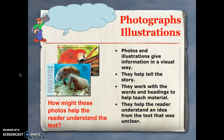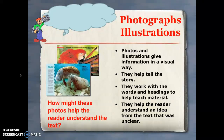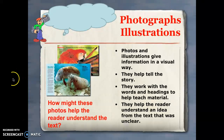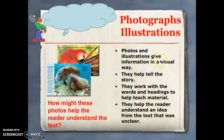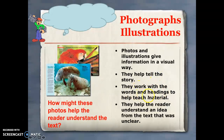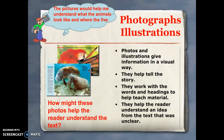The next type of text feature is photographs and illustrations. When reading a fictional story, we are used to pictures drawn by the illustrator. When reading a non-fiction text, photographs and illustrations give us real pictures of information in a visual way. They help tell the story and work with the words and headings to teach different materials. For example, photos might help the reader understand the text about different animals — what they look like and maybe where they live.